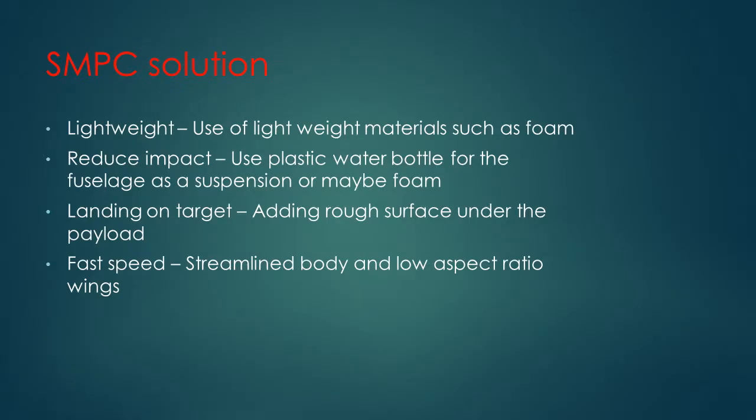For SMP solutions, we have four main points: lightweight, reduce impact, landing on target, and fast speed. For lightweight, we use lightweight materials such as styrofoam to minimize the aircraft weight. To reduce impact, we use recycled plastic bottles as the fuselage to act as suspension in case of any hard landings. In order to land precisely on target, we attach rough surface materials underneath the payload to increase the rate at which the payload decelerates.